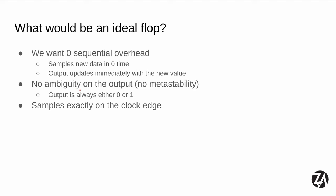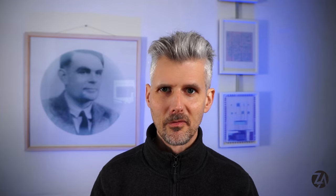There should be no ambiguity on the output — it should always be zero or one — and it should sample exactly on the clock edge, or at a very predictable time we can adjust forwards and backwards. I have a background in engineering and science communication, and that's one reason I love a practical example. The SKY130 open-source PDK is great because it lets me share real-world examples without signing NDAs. I'll use some Verilog to describe hardware — on the positive edge of a clock, sample D and put it into Q, where Q is a register.